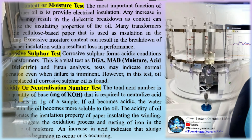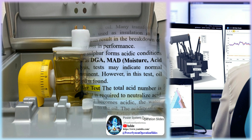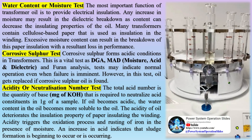Corrosive sulfur test: corrosive sulfur forms acidic conditions in transformers. This is a vital test as DGA, moisture, acid, and dielectric furan analysis tests may indicate normal operation even when failure is imminent. In this test, oil gets replaced if corrosive sulfur is found.